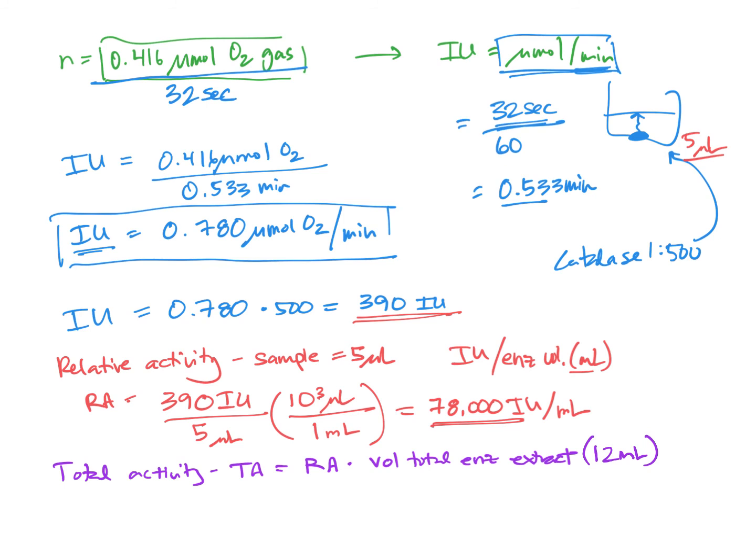So let's calculate out the total activity. Total activity equals 78,000, IU per mil, multiplied by 12 mils. That gets us to 936,000 international units if we were to use the entire, for example, the entire beef liver extract.